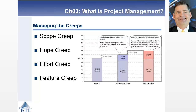Effort creep is the result of a team member working but not making any progress proportionate to the work expended. We'll discuss in later chapters how to estimate task duration, and sometimes those estimates don't work out as planned — tasks take much longer. That's effort creep: it's taking much more effort than was planned in the original project plan. Finally, feature creep is related to scope creep — team members arbitrarily add features and functions to the deliverable that they think the client would like to have, which makes projects late.